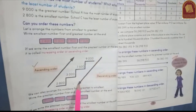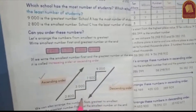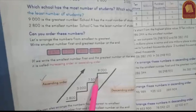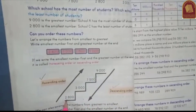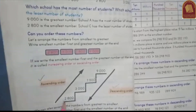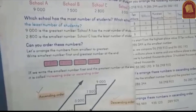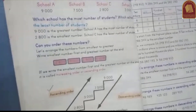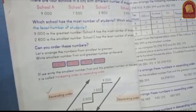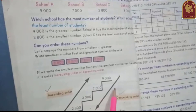Descending order में arrow downward आ रहा है। इसका मतलब यह है कि हम greatest number को पहले लिखते हैं, फिर उसके बाद smallest को। First of all we write the greatest number, at the end we write the smallest number. आप याद रखेगा: ascending order में from smallest to greatest, descending order में from greatest to smallest।